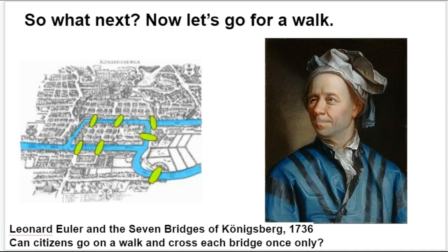I just introduced you to Leonard Euler and the famous problem now known as the Seven Bridges of Königsberg, which dates back to 1736. The question is, can you go for a walk in this city and cross each bridge only once?